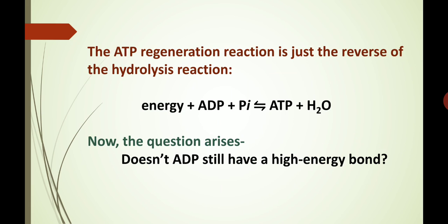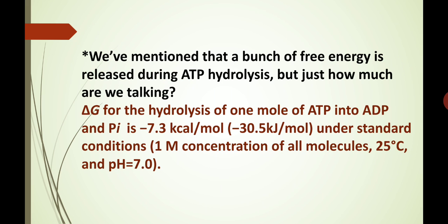Now, the question arises: doesn't ADP still have a high energy bond? We have mentioned that a bunch of free energy is released during ATP hydrolysis, but just how much are we talking? Delta G for the hydrolysis of 1 mole of ATP into ADP and inorganic phosphate is minus 7.3 kilocalories per mole, or minus 30.5 kilojoules per mole under standard conditions — that is, 1 molar concentration of all molecules at 25 degrees centigrade and pH of 7.